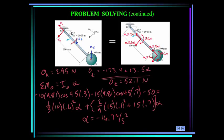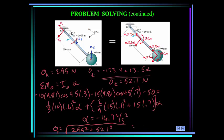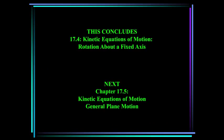The magnitude of the reaction at O is the square root of 295² + 52.1² = 299 N. This concludes chapter 17.4, kinetic equations of motion for rotation about a fixed axis. Next up is chapter 17.5, kinetic equations of motion for general plane motion.